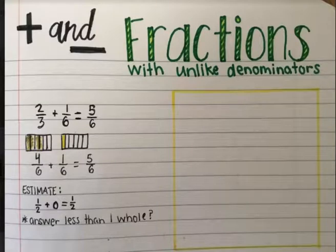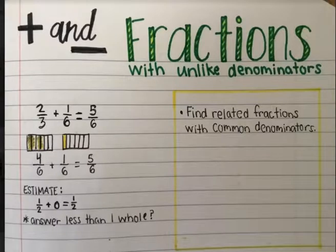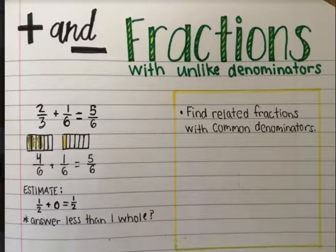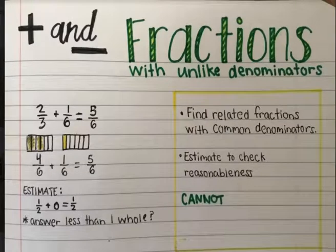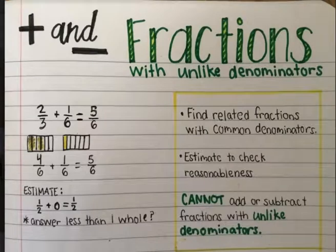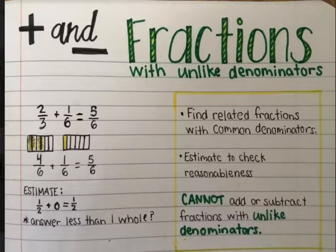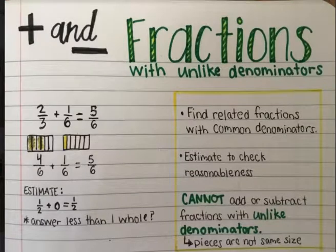So what are those important things to remember? First, we want to find related fractions with common denominators — our addends must have common denominators. Also, we always want to estimate and check for reasonableness, make sure our answer makes sense. And one last important thing to really remember is that we cannot add or subtract when we have fractions with unlike denominators. Pause here and think about why. We can't add and subtract with fractions with unlike denominators because the pieces are not the same size.